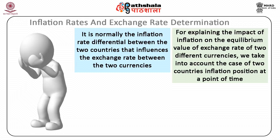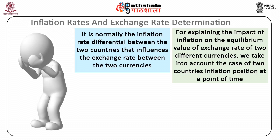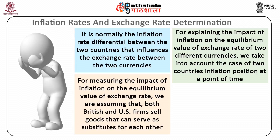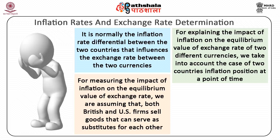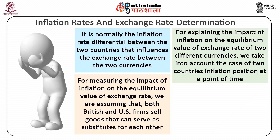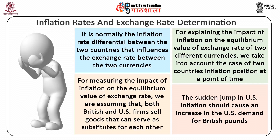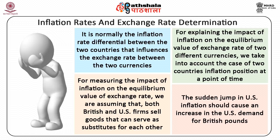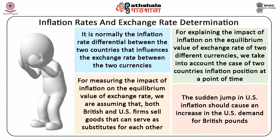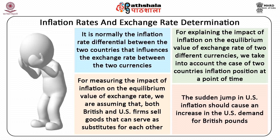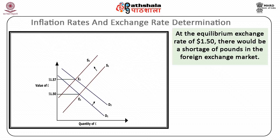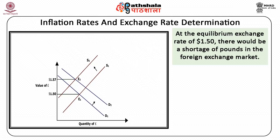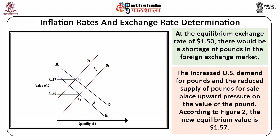Consider how the demand and supply schedules would be affected if US inflation suddenly increased substantially while British inflation remained the same. We assume that both British and US firms sell goods that can serve as substitutes for each other. The sudden jump in US inflation should cause an increase in the US demand for British pounds. In addition, the jump in US inflation should reduce the British desire for US goods and therefore reduce the supply of pounds for sale. These market reactions are explained in the above figure. At the equilibrium exchange rate of $1.50, there would be a shortage of pounds in the foreign exchange market. The increased US demand for pounds and the reduced supply of pounds place upward pressure on the value of the pound.